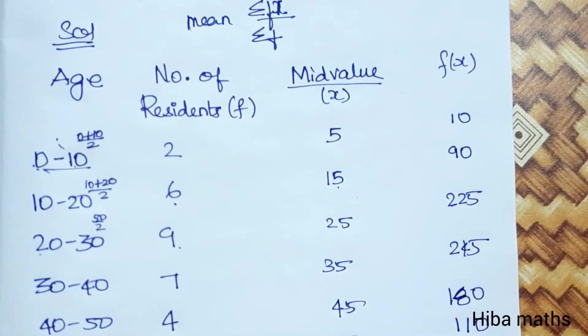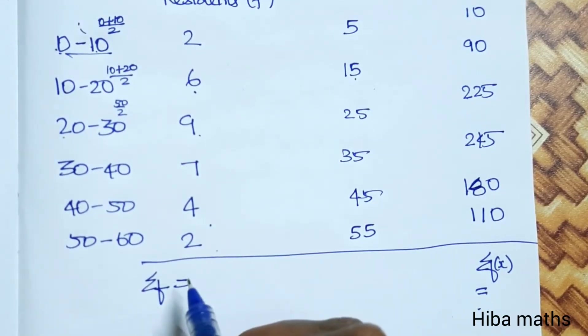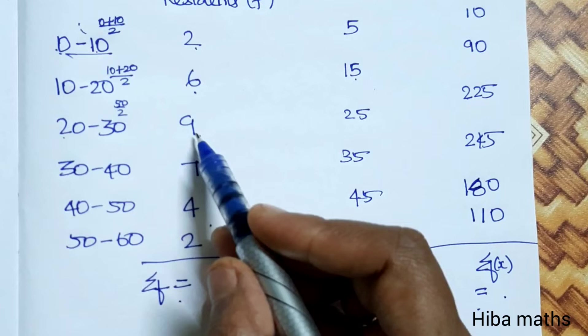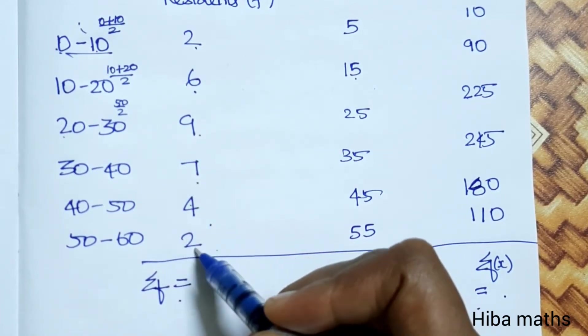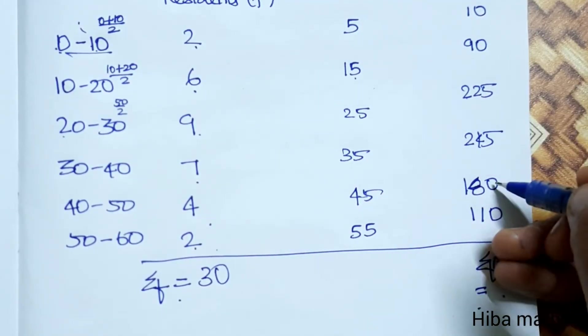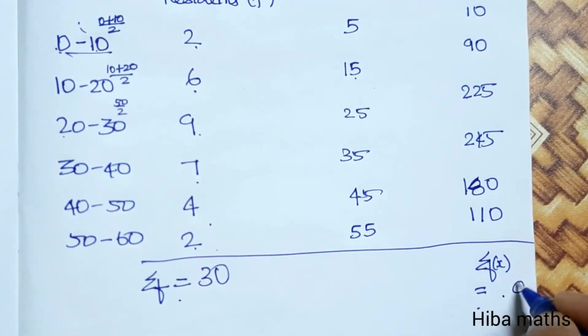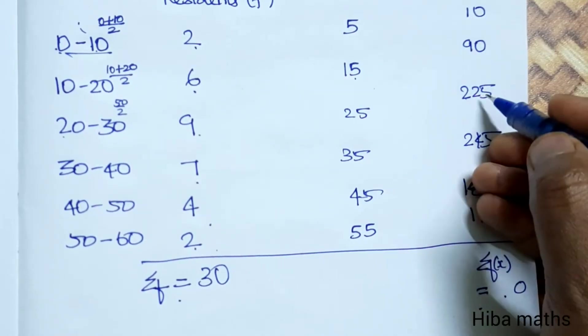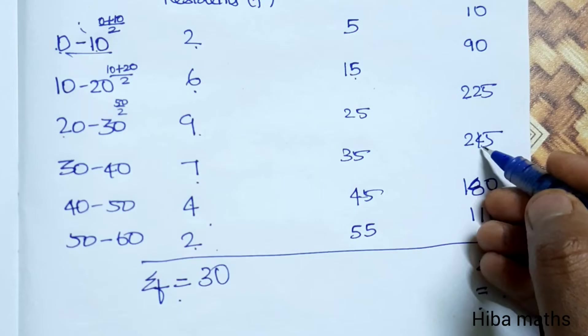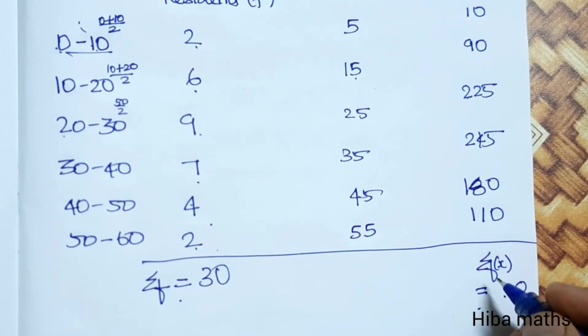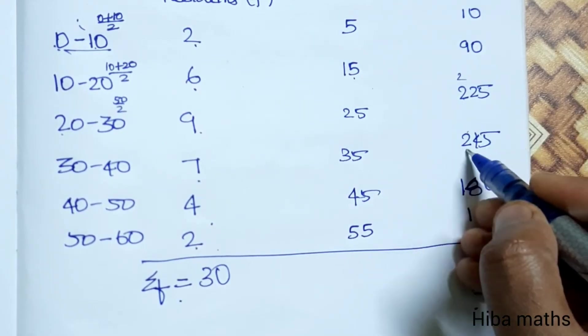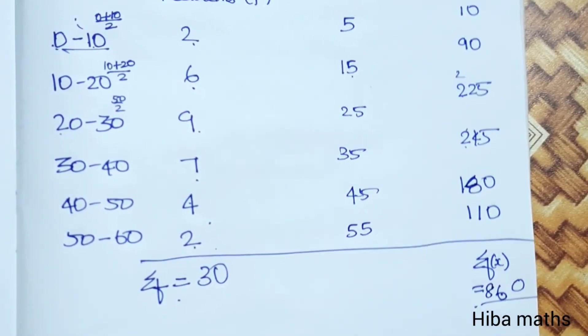Now we add the values. We add the f column: 2 plus 6 is 8, plus 9 is 17, plus 7 is 24, plus 4 is 28, plus 2 is 30. And we add the fx column to get 860.